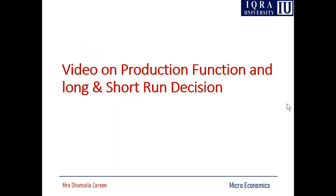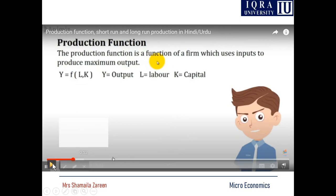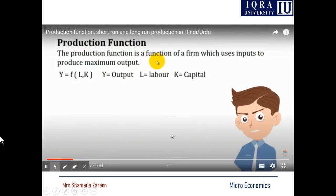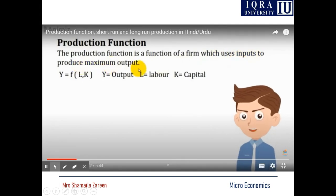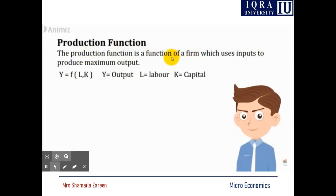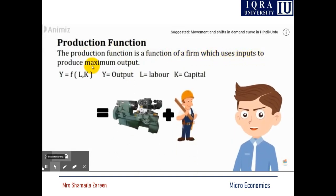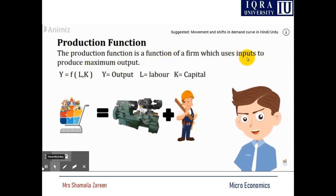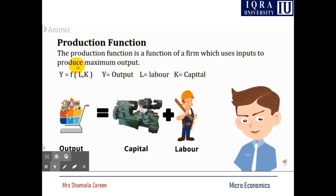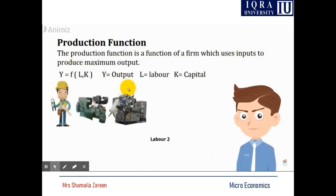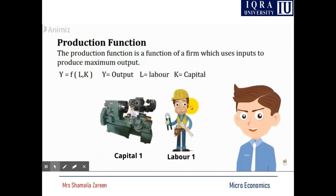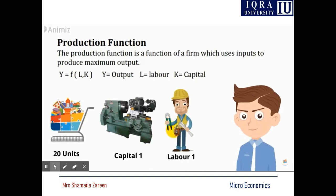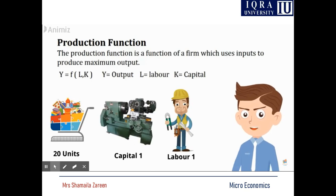This table shows the short run decisions of the production function. The production function is the function of a firm which uses inputs to produce maximum output. A production function is any firm's key function through which a firm uses inputs to produce maximum output — inputs include labor and machinery.